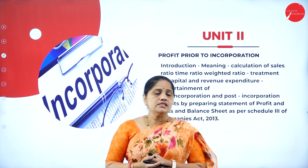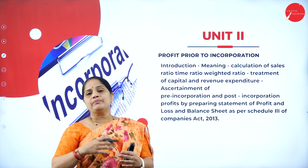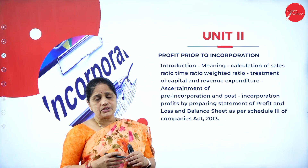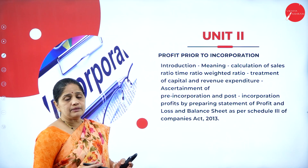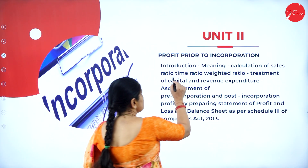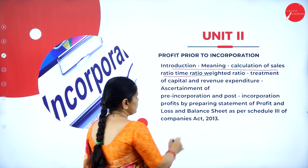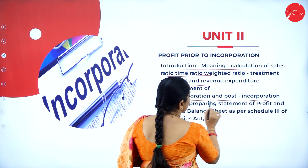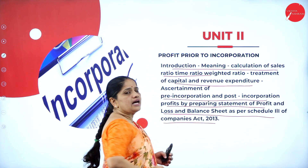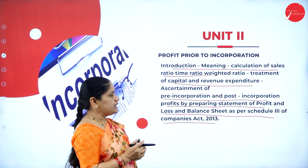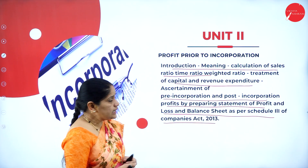Then in Unit 2, that is profit prior to incorporation — what do we mean by profit prior to incorporation? If there is a running business which is taken over by a corporate sector, then what happens to the profits earned by that particular organization before it is taken over by the joint stock company? How do you ascertain the profits and how do you allocate the profits as revenue expenditure and capital expenditure? We will be learning about the meaning, calculation of sales ratio, time ratio, and weighted ratio, treatment of capital and revenue expenditure, and ascertainment of pre-incorporation and post-incorporation profits by preparation of statement of profit and loss account and balance sheet as per the Companies Act of 2013.